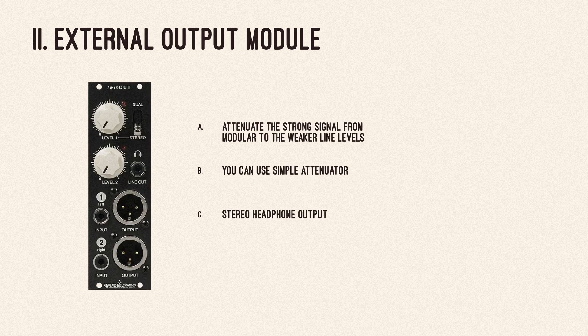An external output module will attenuate the strong signal from your modular to the generally weaker line levels, so the inputs of your mixing console or recording device won't get overloaded with too much signal. Such a module is not strictly necessary — you can use a simple attenuator — but using an output module is always a safe and reliable solution. Output modules usually offer a stereo headphone output too, so you can plug your headphones directly into your system.